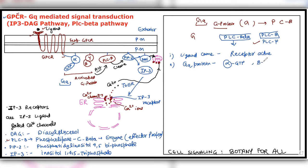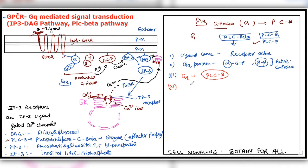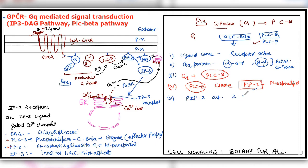Here is the active G protein — alpha-GTP binds separately, beta-gamma bind separately. This is the active G protein, as we have studied in GPCR. Now, the activator GQ protein activates the enzyme phospholipase C, whose job is to break down lipids — phospholipids. There is a phospholipid in the plasma membrane which PLC-beta cleaves, whose name is PIP2 — Phosphatidylinositol 4,5-bisphosphate. PIP2 is a phospholipid, and the job of phospholipase is to break down phospholipids. When PIP2 is cleaved, it activates two secondary messengers.